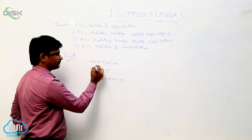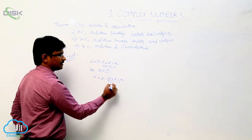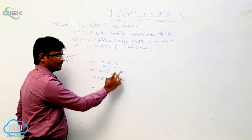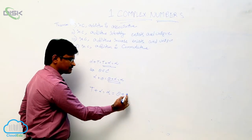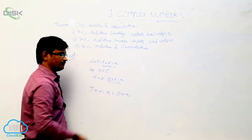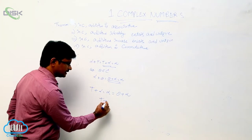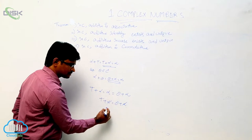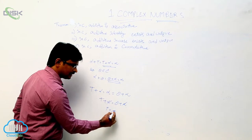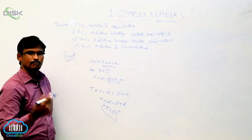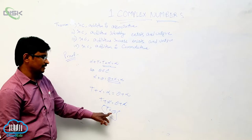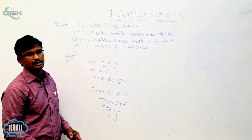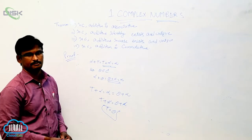Observe this equation and this one. We have t plus alpha equal to alpha, which is also equal to theta plus alpha. So that gives t plus alpha equal to theta plus alpha, therefore t equal to theta. This means if you take one more additive identity, both are equal, which shows the uniqueness of the identity.